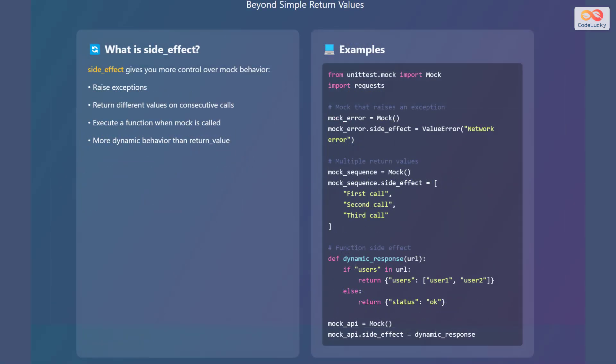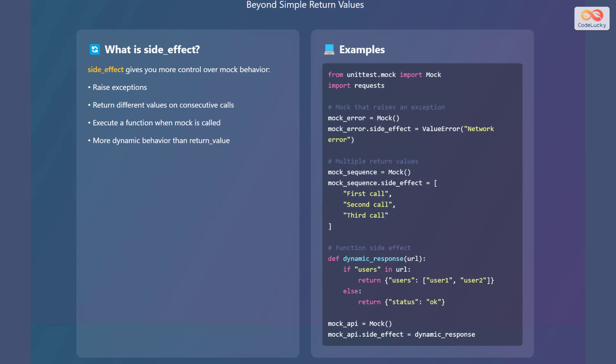Let's see how to use side_effect beyond simple return values. side_effect gives you more control over mock behavior. It can raise exceptions, return different values on consecutive calls, and execute a function when the mock is called. This provides more dynamic behavior than return_value. For example, you can use side_effect to mock that raises a ValueError exception. You can also use it to return multiple return values in sequence. Additionally, you can define a function as a side effect to provide dynamic responses based on the input.